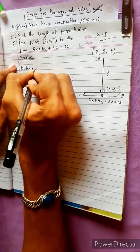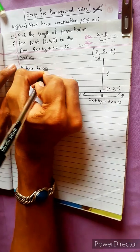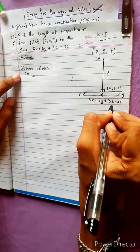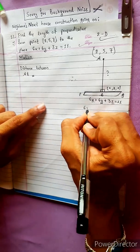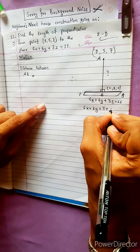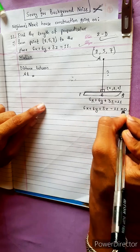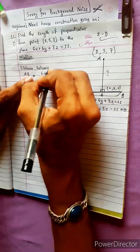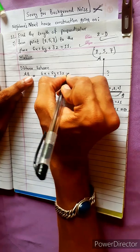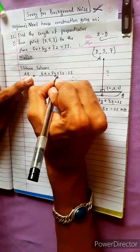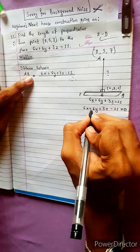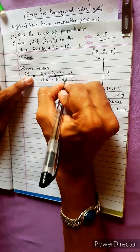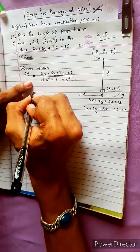The other method is the distance between a point and a plane. Given the equation 6x plus 6y plus 3z minus 11 is equal to 0, we have to write this equation divided by the magnitude: square root of 6 squared plus 6 squared plus 3 squared.